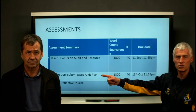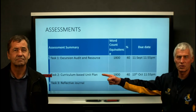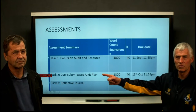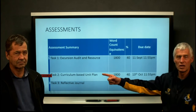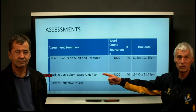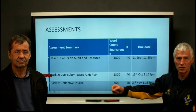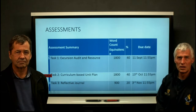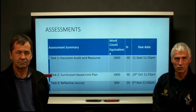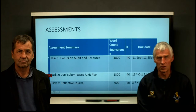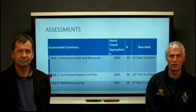The Excursion Audit and Resource is due 11th of September. The Curriculum Based Unit Plan, which you should be familiar with developing units — this time for physics, however — and of course the reflective journal. The word limits and dates are there.